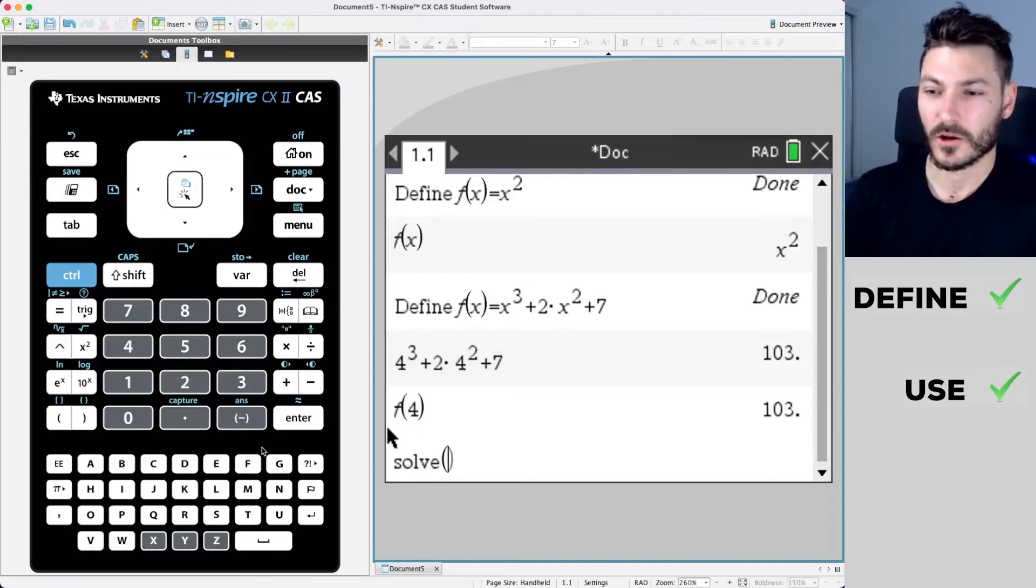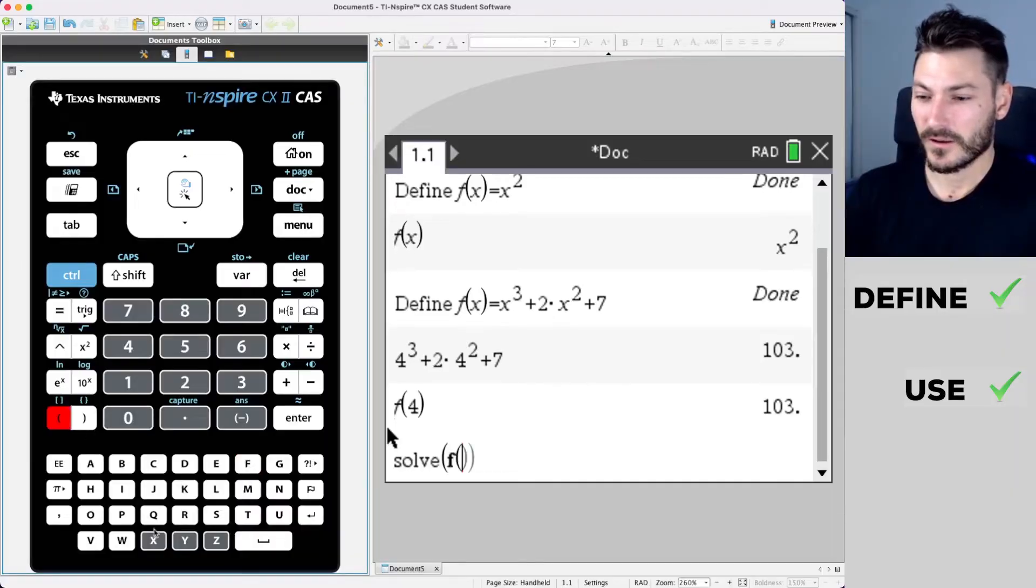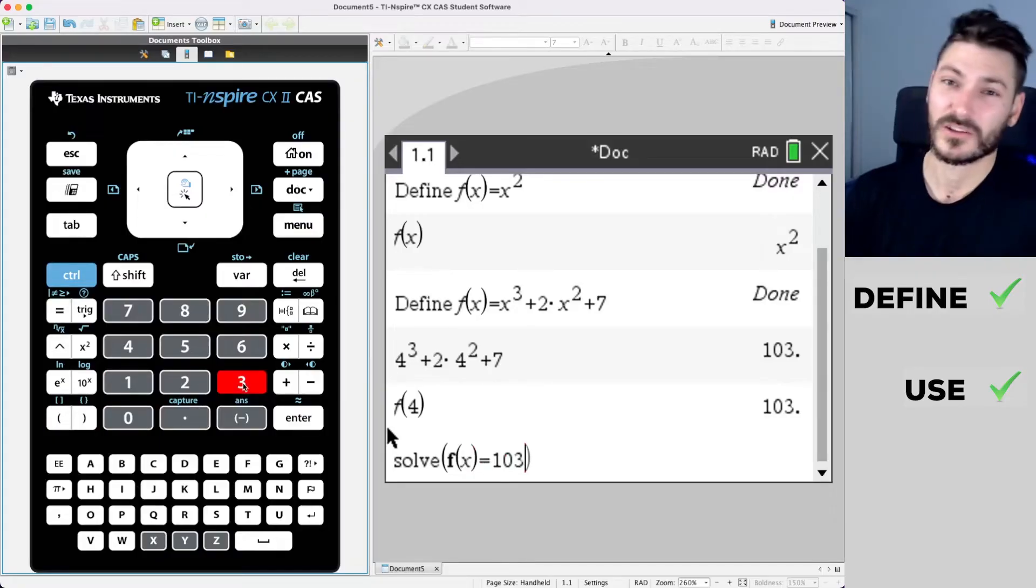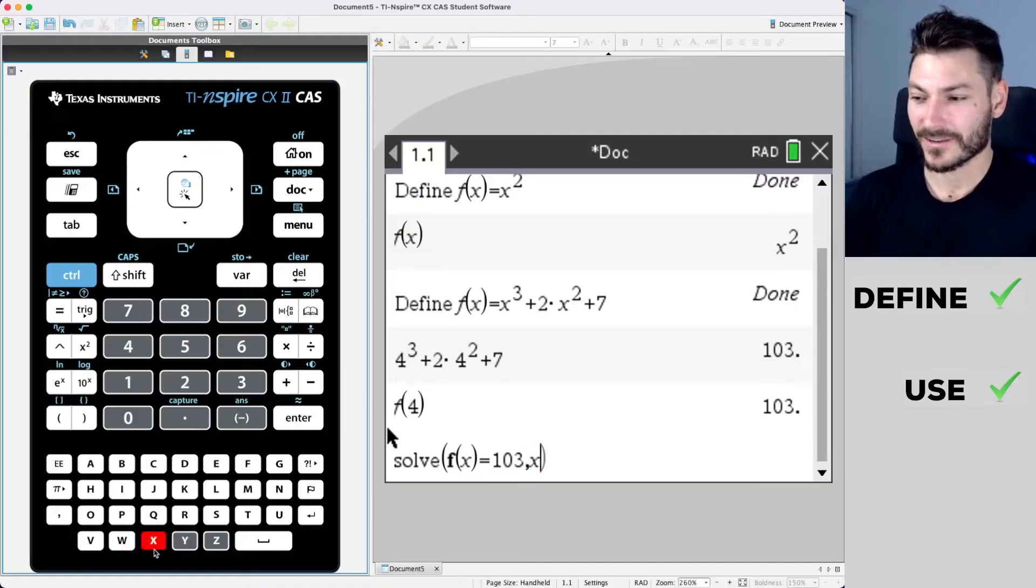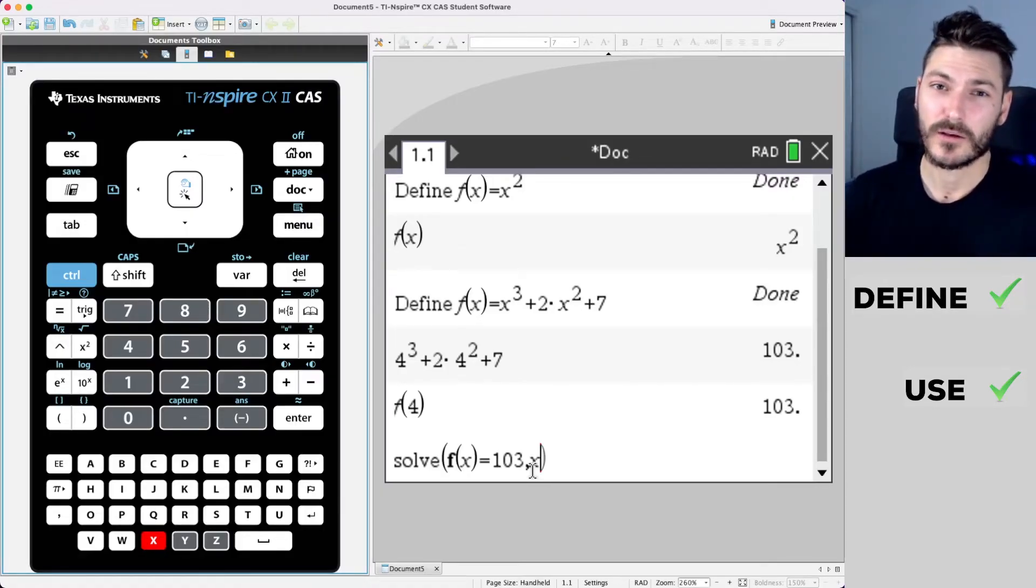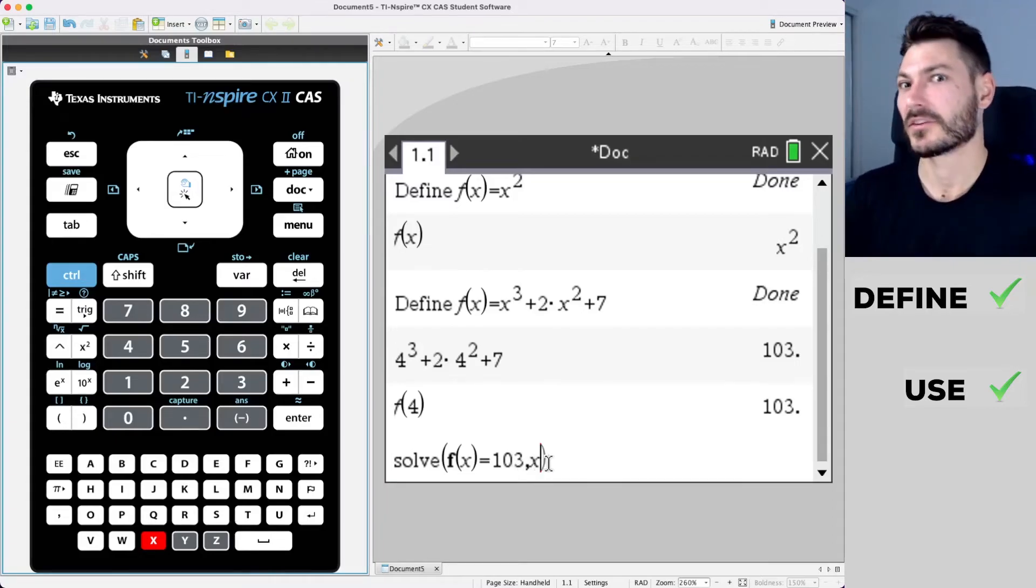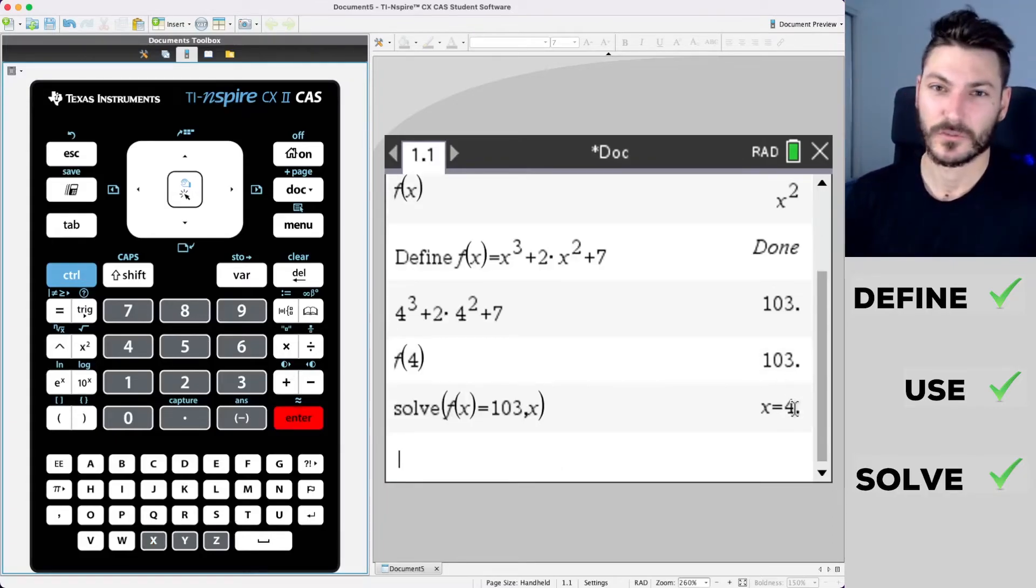You can also type solve and then open a parenthesis. And I'm going to type f(x) equals 103 because I know the answer is 4. So we can test if it works, press comma, and then x. This comma and then x is telling the calculator that you're trying to solve for x. This can become a handy tool if you have multiple variables and you're trying to solve for a different variable. But for now, we only have one. We still have to tell it we're solving for x. Hit enter. The answer is 4.